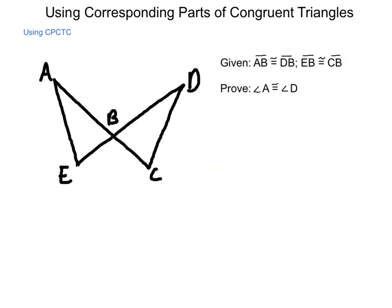We're going to use the corresponding parts idea and the information that we have here in order to establish other parts that we don't know yet. So given that AB is congruent to DB, so we're going to mark this on our triangle, and EB is congruent to CB,